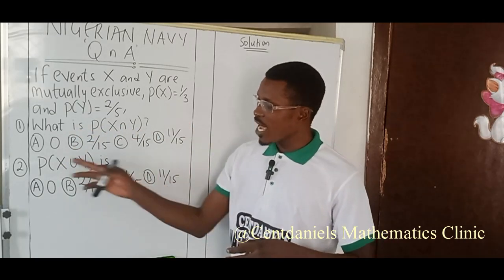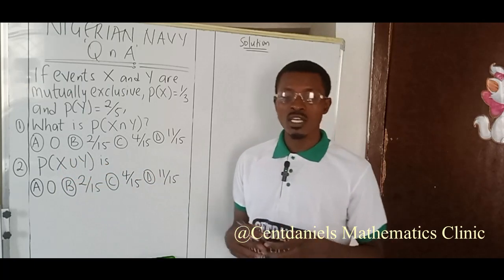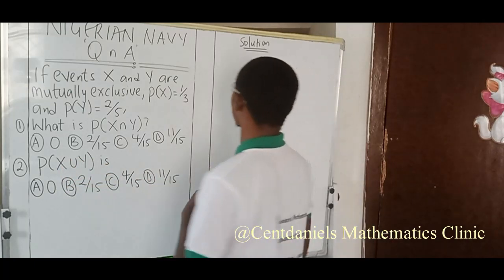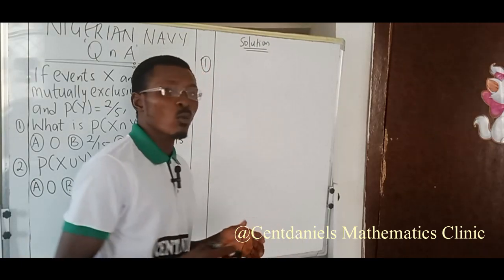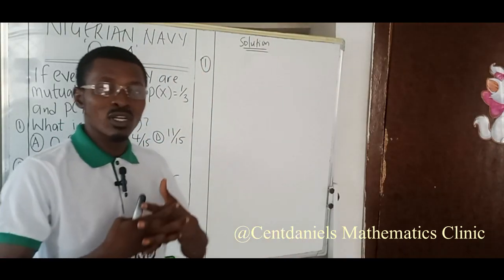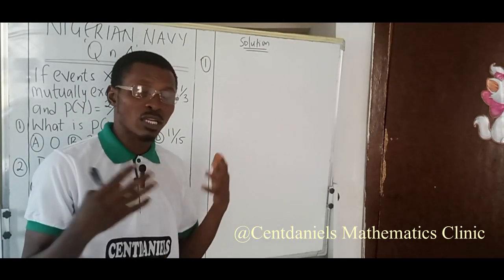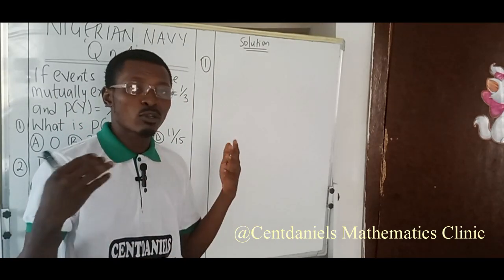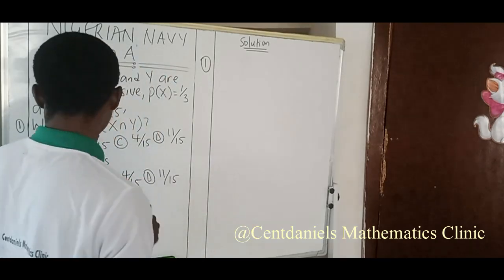Now we'll go to the solution. When two probabilities are mutually exclusive, it means that they don't happen, they cannot happen at the same time. And when they cannot happen at the same time, it means there's no intersection. So for that reason, we'll say number one: P of X intersection Y equals zero, simple as that.